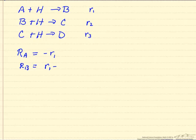Likewise C is involved in two reactions, R2 minus R3. D is only involved in one reaction, and then H is involved in all three reactions as a reactant, so its stoichiometric coefficient is negative in each case.